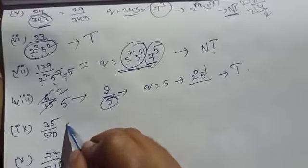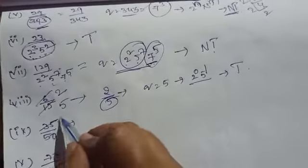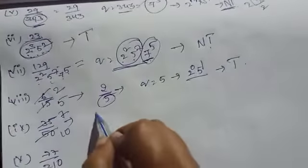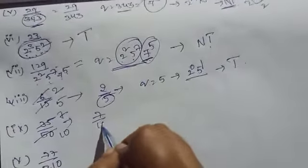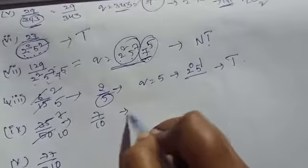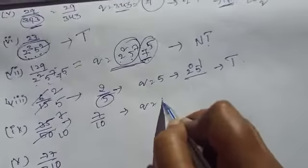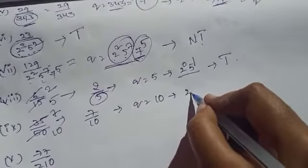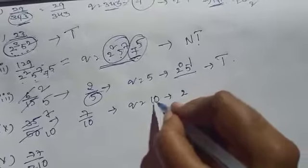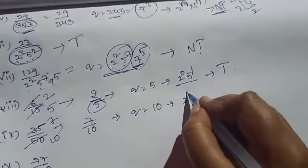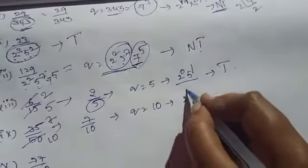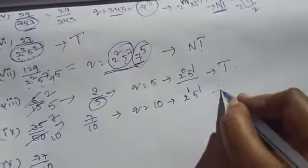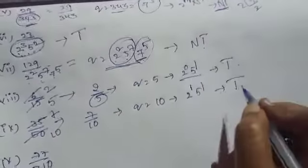Next: 35 by 50. Simplifying: 5 is common, giving 7 by 10. Here q is 10. 10 can be written in the form of 2 power n into 5 power n, specifically 2 power 1 into 5 power 1. So it is a terminating decimal.